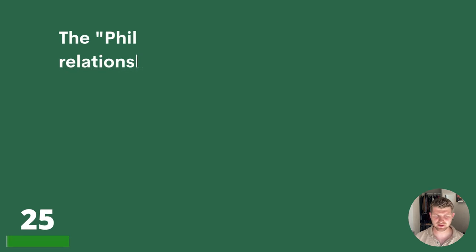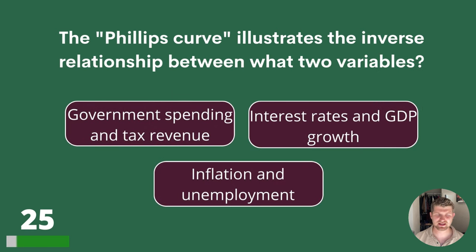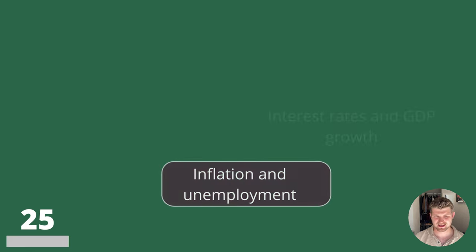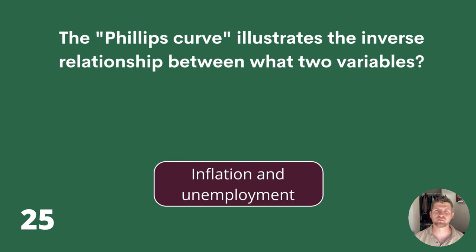Question 25. The Phillips Curve illustrates the inverse relationship between what two variables? Government spending and tax revenue, interest rates and GDP growth, or Inflation and Unemployment? The answer is Inflation and Unemployment.